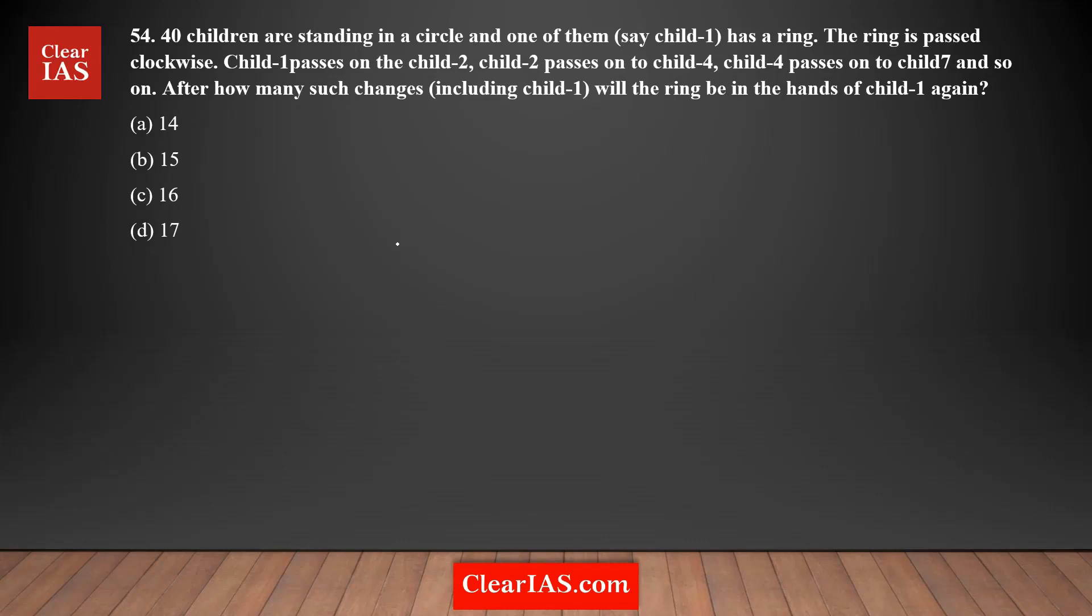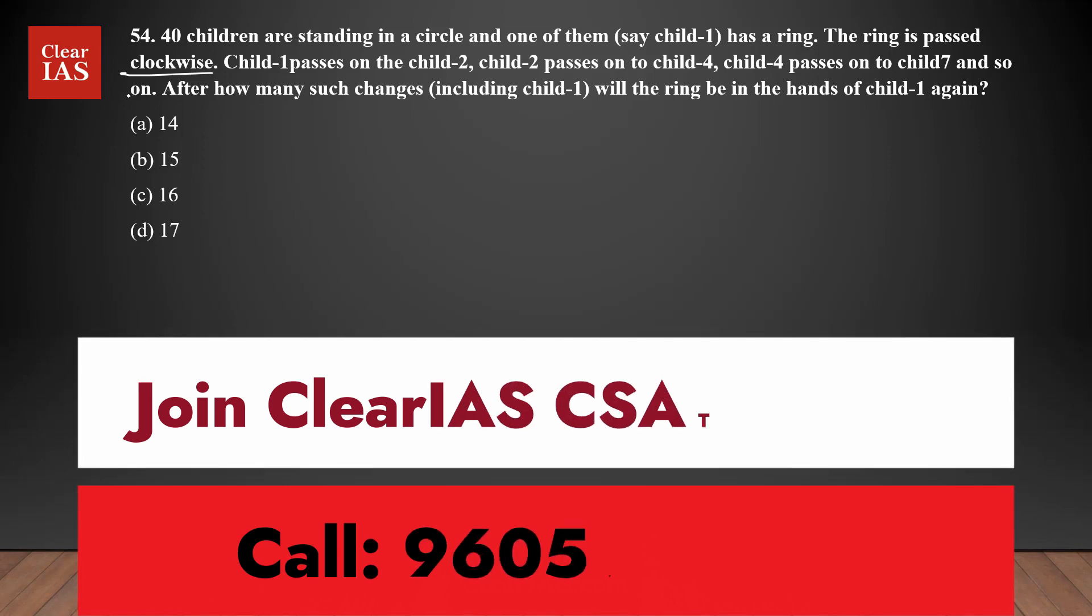This is a logical and reasoning based question. There are 40 children standing in a circle. Child one has a ring, and the ring is passed clockwise. After 40 children, it's going to be the first child again - it goes on like that.